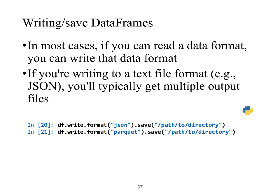The last operation is writing or saving data frames. In most cases, if you can read a data format — such as JSON, CSV, or Parquet — then you can also write that data format. For example, by specifying the format and the path, you can save the data frame. By default, if you are writing to a text file format like JSON, you will typically get multiple output files.